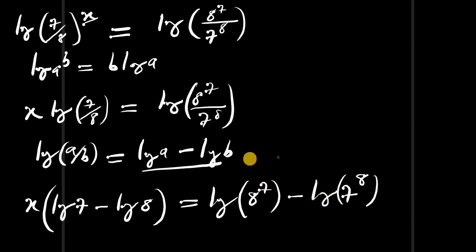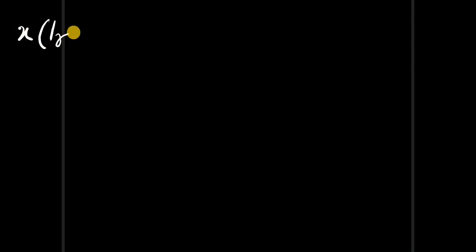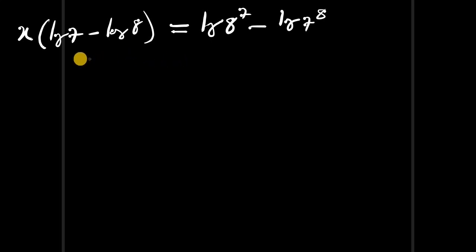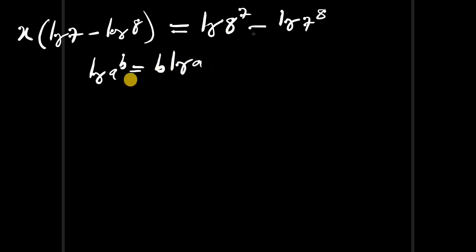Moving to the next slide for space, we have x times (log 7 minus log 8) equals log of 8 to the power of 7 minus log of 7 to the power of 8. Now applying the identity log of a to the power of b equals b times log of a to both terms on the right.